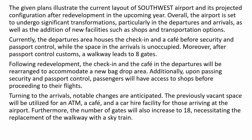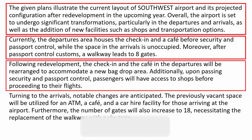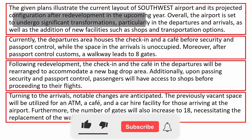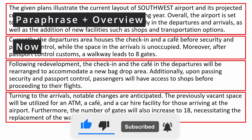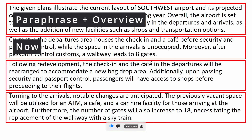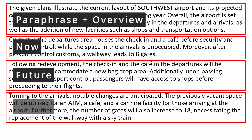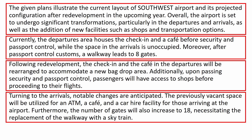I organized my essay in four paragraphs. In the first one, I paraphrased and added my overview. In the second one, I described the current plan. In the third one, I described the future plan, mostly focused on the departures. And in the last one, I described the future plan focused on the arrivals and the gates. I wrote 172 words in total.